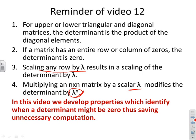In this video we'll develop properties that identify when a determinant might be zero, because if we can look at a matrix and say straight away that the determinant is zero, we've saved ourselves a lot of computation.